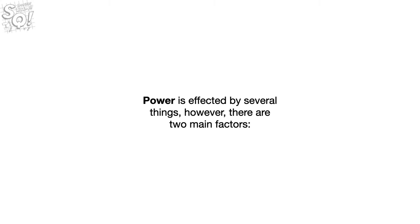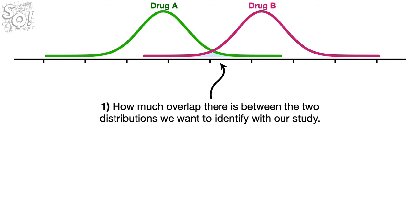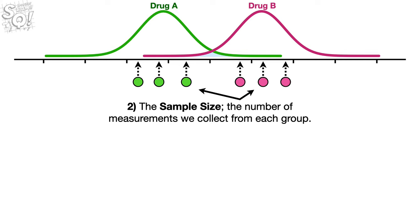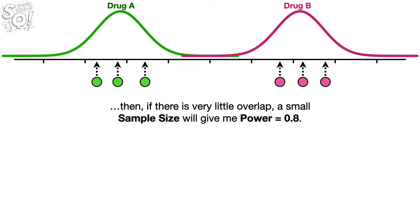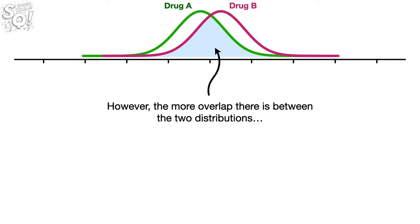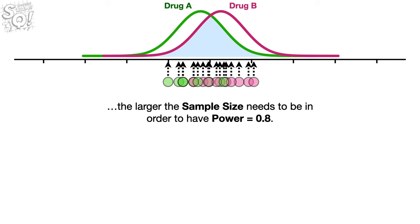Power is affected by several things. However, there are two main factors. One, how much overlap there is between the two distributions we want to identify with our study. Two, the sample size — the number of measurements we collect from each group. For example, if I want to have power equal to 0.8, meaning I want to have at least an 80% chance of correctly rejecting the null hypothesis, then if there is very little overlap, a small sample size will give me power equal to 0.8. However, the more overlap there is between the two distributions, the larger the sample size needs to be in order to have power equal to 0.8.